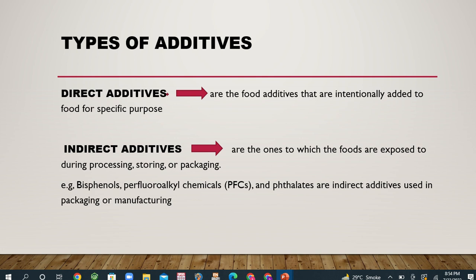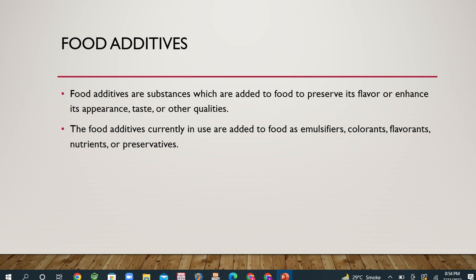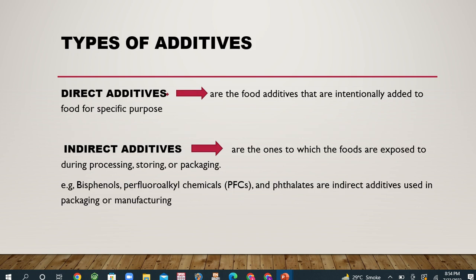Some examples of indirect additives include bisphenol, which is an intermediate formed during the production of polycarbonates, as well as some perfluoroalkyl chemicals and phthalates, which are indirect additives used in packaging or manufacturing. In this way, we have discussed food additives and the types of food additives.